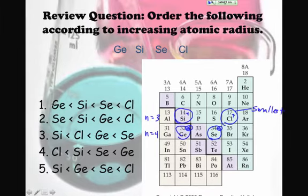And I believe that matches none of my choices. What? Germanium, then selenium, then silicon, and then chlorine. Doesn't that make sense? Makes sense to me.